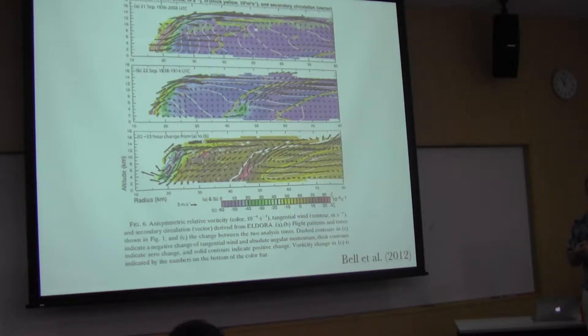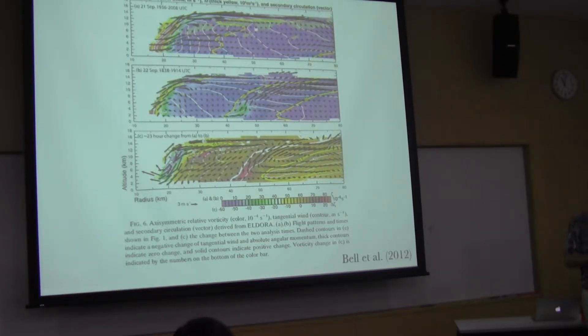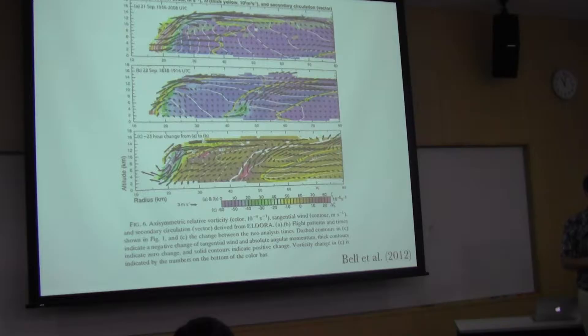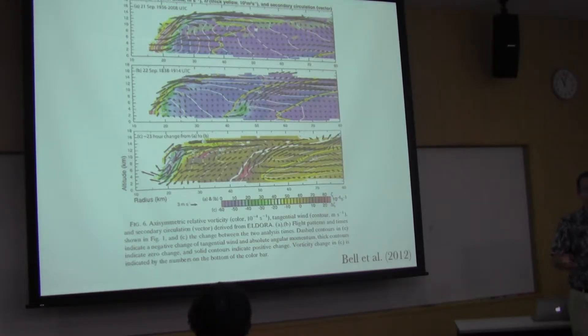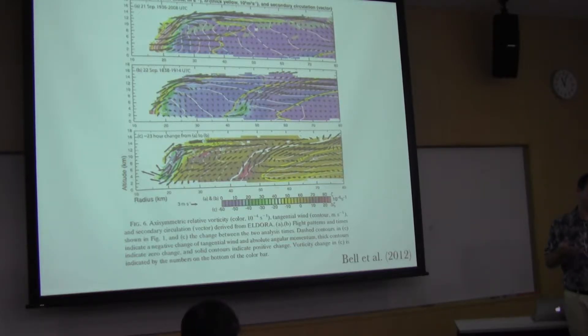My feeling is that it's a combination of those two things. We need convection, and like Ito-san's poster, we need convection to occur at that radius. It's clear in this case that there was a lot of deep convection occurring in the primary rain band. But then we also need dynamics to assist. Whether the supergradient wind is the initial thing or the convection is very difficult to distinguish.